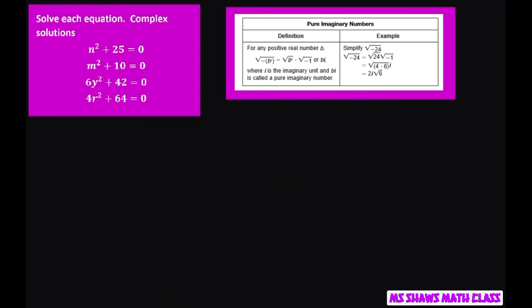Let's do the next two. So for the next one we have 6y squared plus 42 equals 0. You're just solving for y. Get negative 42, divide both sides by 6. So now we have y squared equals negative 7.